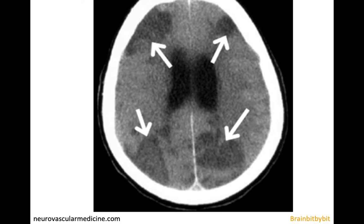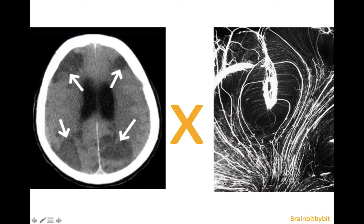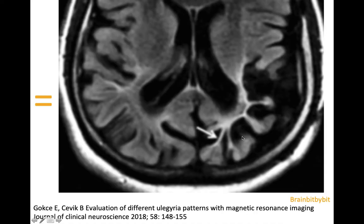If you look at where ulegyria is mainly located more generally, it occurs in the same regions as the ischemic watershed territories seen in adults following cardiac arrest. So ulegyria occurs in the watershed area of the watershed area. That is why you have loss of cortex in the depth of the sulcus, mainly in the parietal and occipital regions. Because these are vascular territories, the distribution is not as symmetrical as in a pure metabolic disease — there is some variance in the vascular territories.